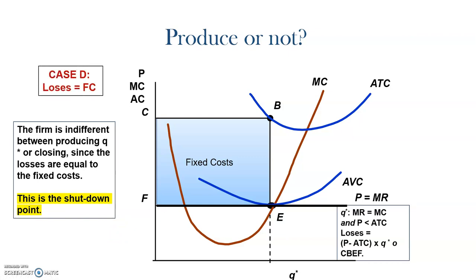Case D is where the point where the price equals to the marginal cost coincides exactly with the average variable cost. Then we will not be able to cover any of the fixed costs, but at least we will be covering all the variable costs, which in the short run is enough to keep producing. In this case, the losses equal to the fixed cost, which will be the area C, B, E, F. This point is called the shutdown point, as it is the point where the firm will decide to stop producing. Exactly at this point, the company will be indifferent between producing or not, because it will be covering at least all the variable costs, but it can also decide not to produce anymore.